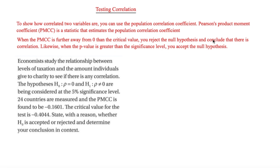When setting up a hypothesis test, H0 is always that rho equals zero — in other words, there is no correlation. Then H1, your alternative hypothesis, says rho is not equal to zero. This would be a two-tailed test. You can also say rho is greater than zero or rho is less than zero, depending on whether you're testing for positive or negative correlation.